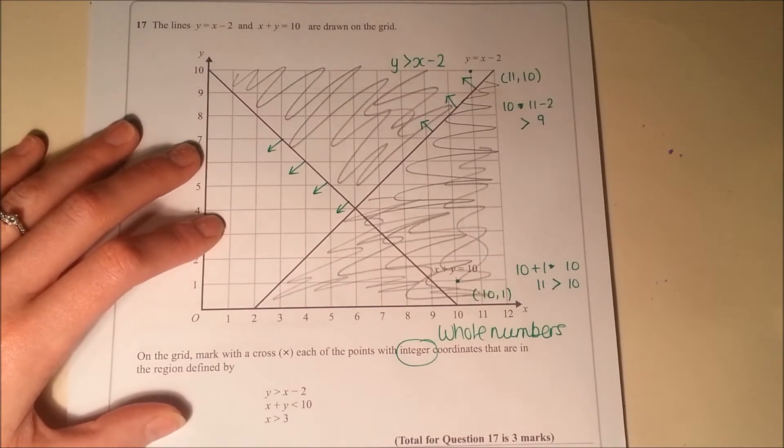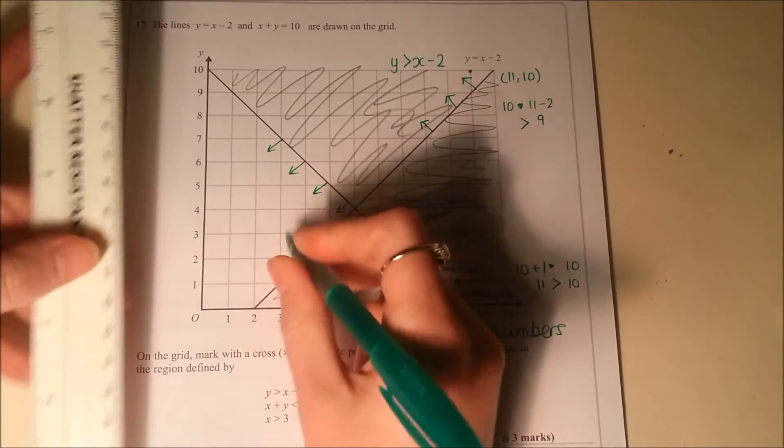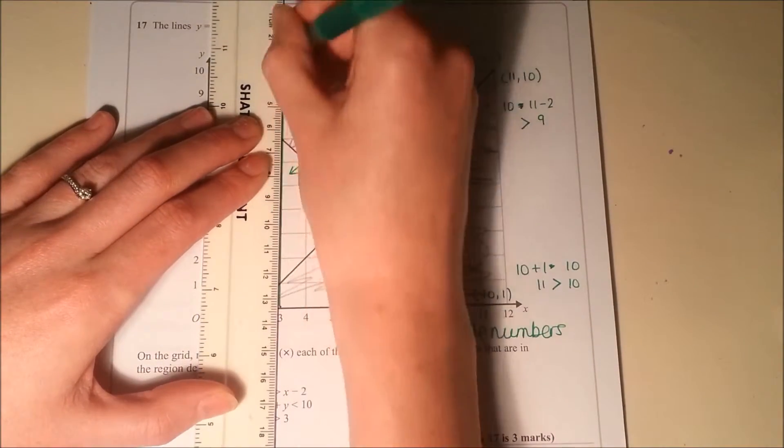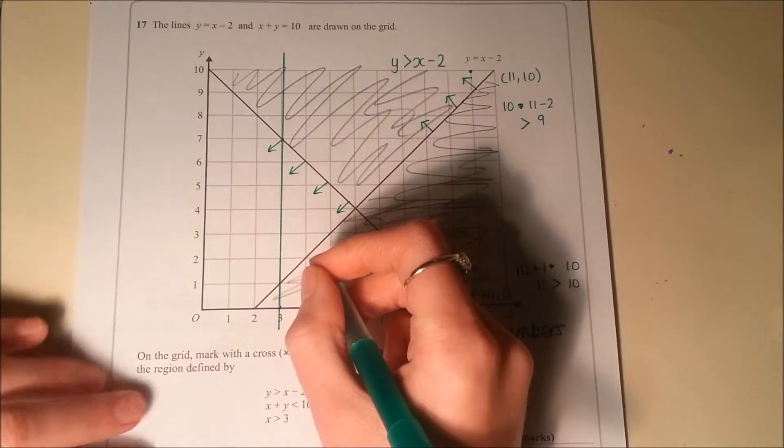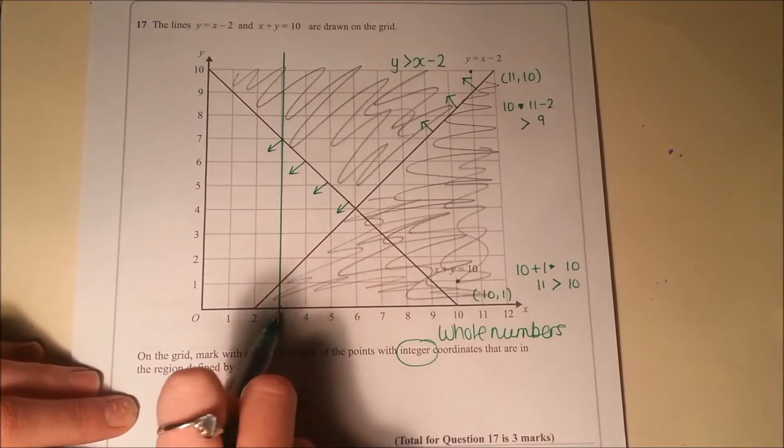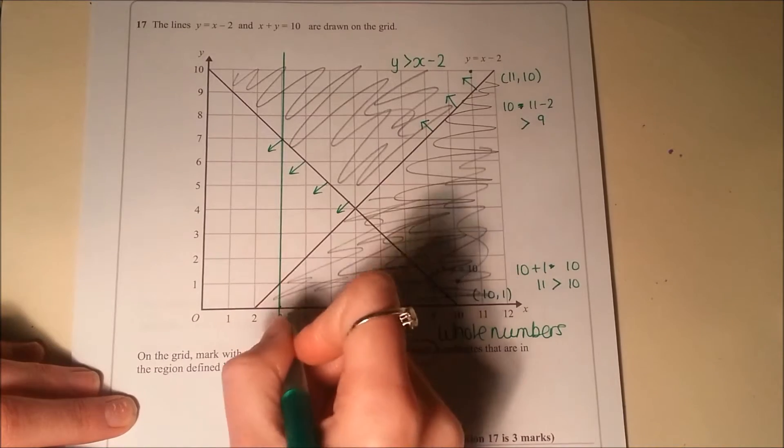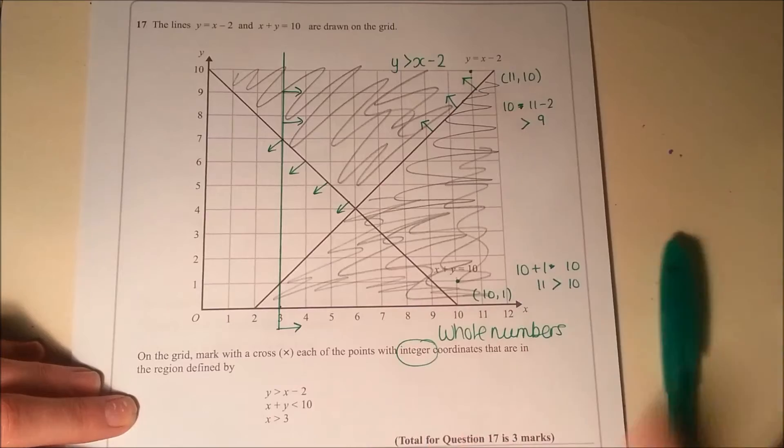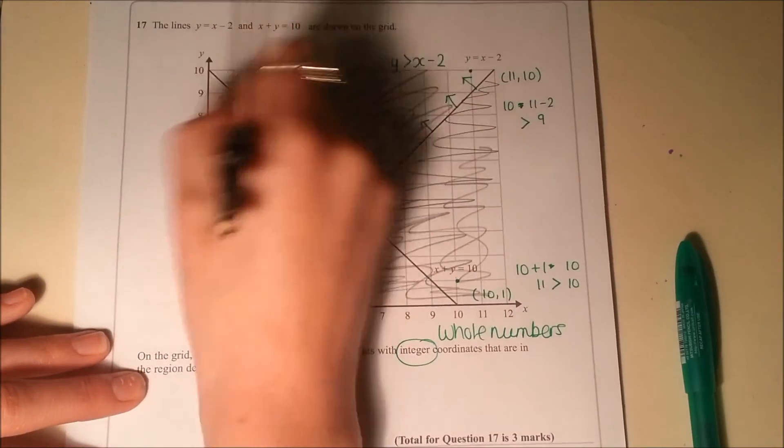Right, we've also got to look at x is greater than 3. So first of all, we're going to need the line x is 3. So that's the line up here, like this. And all the points where x is greater than 3, that's quite easy to do because it's all of the points up this way. So we want to also be this side of here. So we're also not interested in any of this.